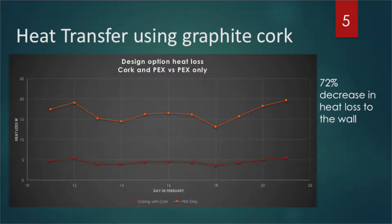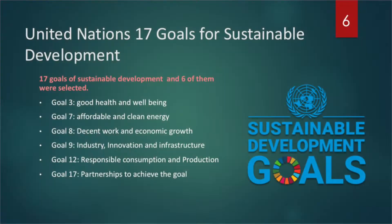This means that 72 percent of the heat loss to the wall is now being directed to the window frame and the room. Our team was exposed to the 17 sustainable development goals from the start, and this was the main motivation for the project. The group decided to focus on six of the 17 goals.